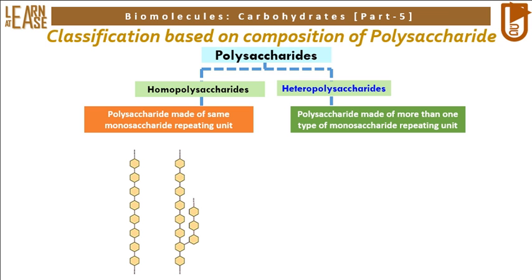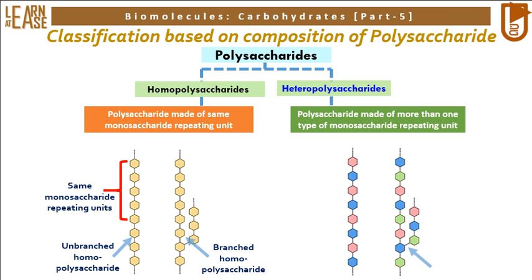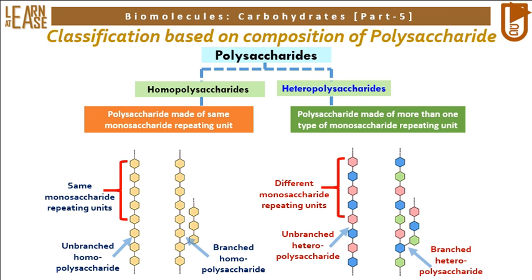The image on the bottom left represents two types of homopolysaccharides: branched homopolysaccharides and unbranched homopolysaccharides. In the image all the repeating units are represented using the same color, which suggests that all the repeating units are the same. The image on the bottom right represents two types of heteropolysaccharides: branched and unbranched heteropolysaccharides, where the repeating units are shown in different colors indicating more than one type of monosaccharide unit.